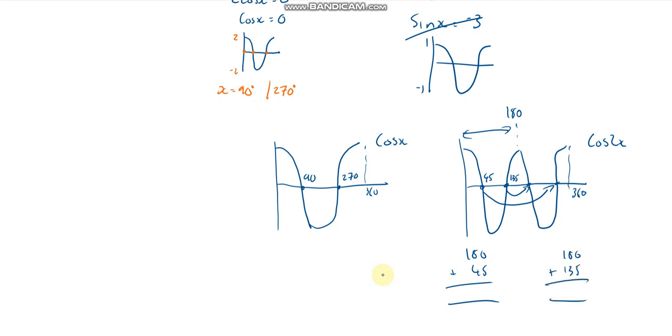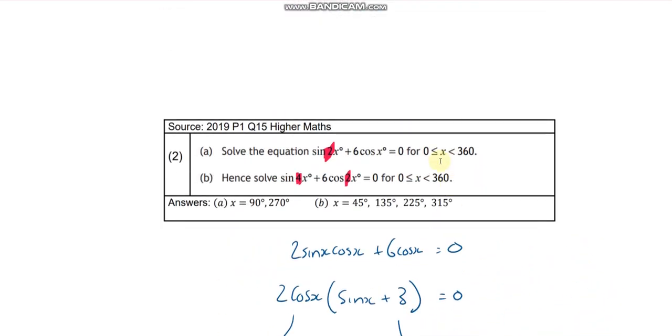That's going to give me a final two answer. So what's that? 225 and 315. There we go. So 45, 135, 225, and 315. Let's go check that. There we go.